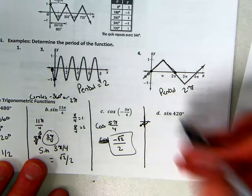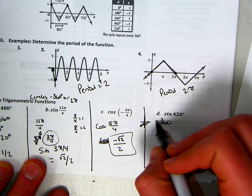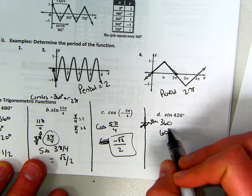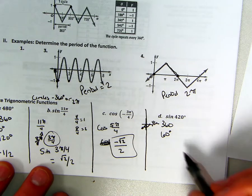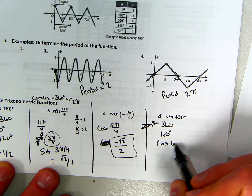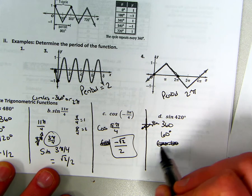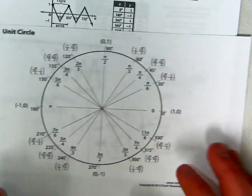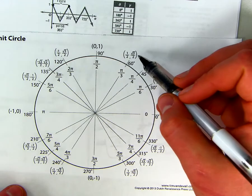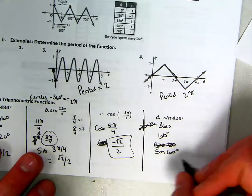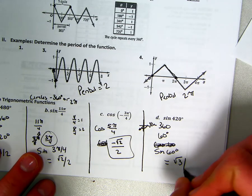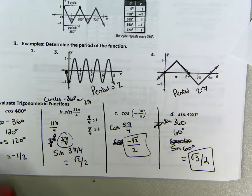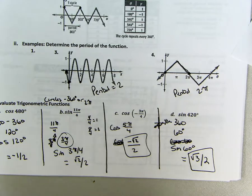And the last one, sine 420, so again we take 360, take 420 minus 360, and we get 60 degrees. All right, so sine 60 degrees. And I'm going to look at this, and it's the square root of 3 over 2. So just take your time to solve these, figure them out.